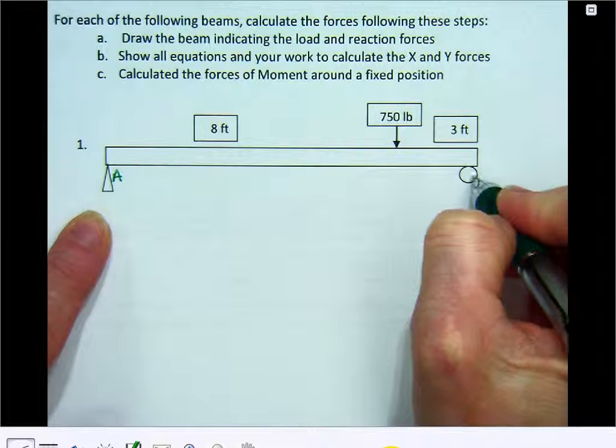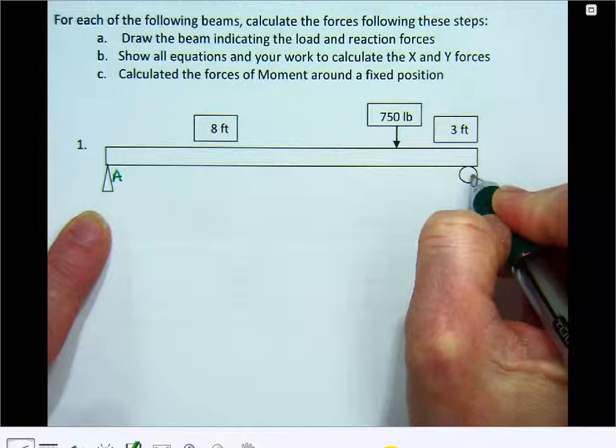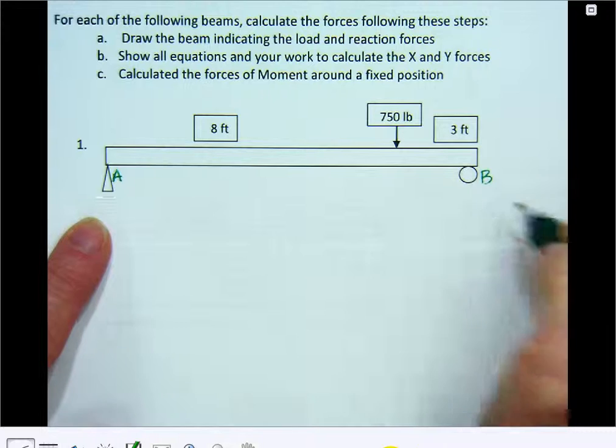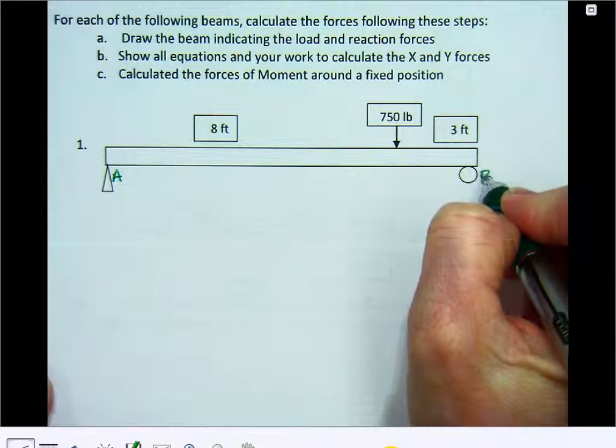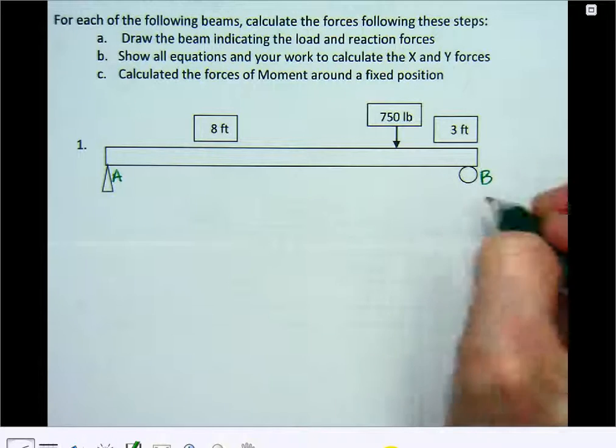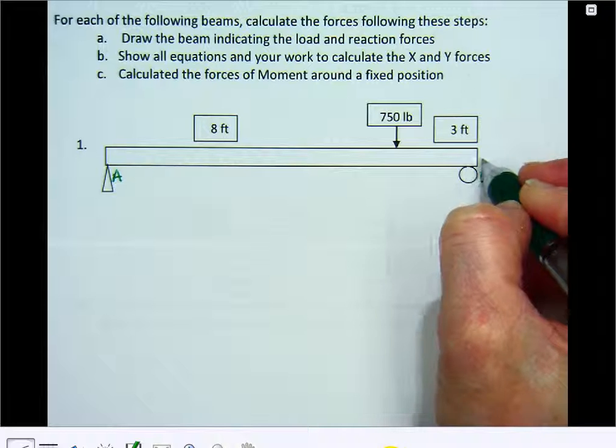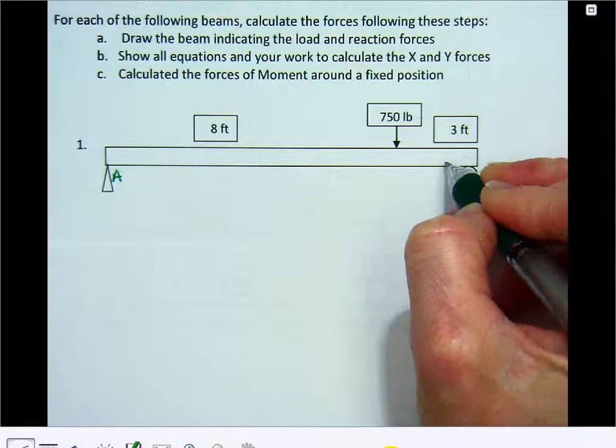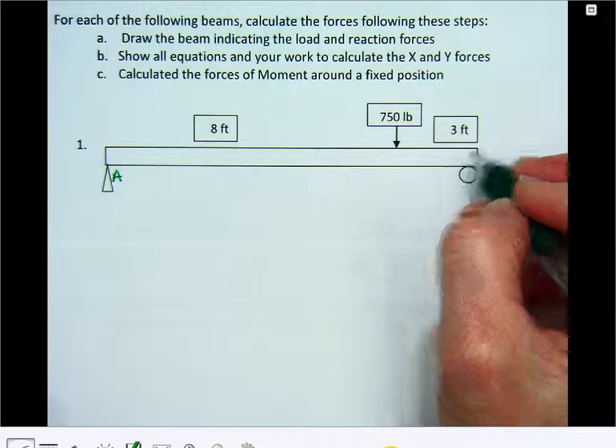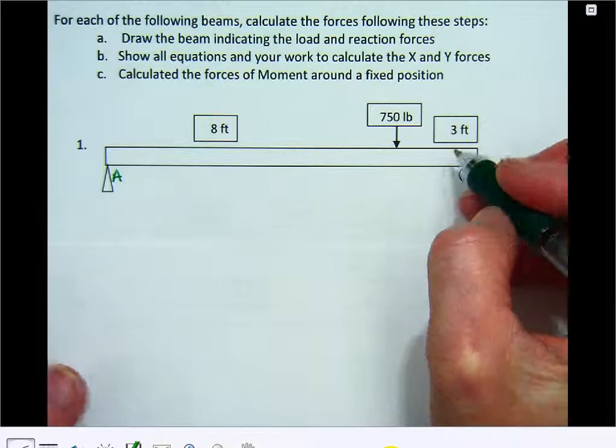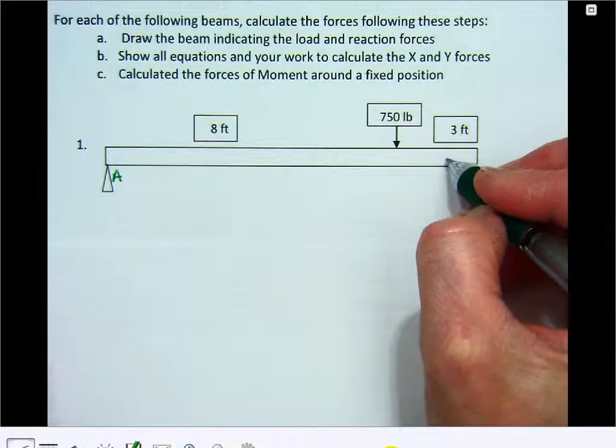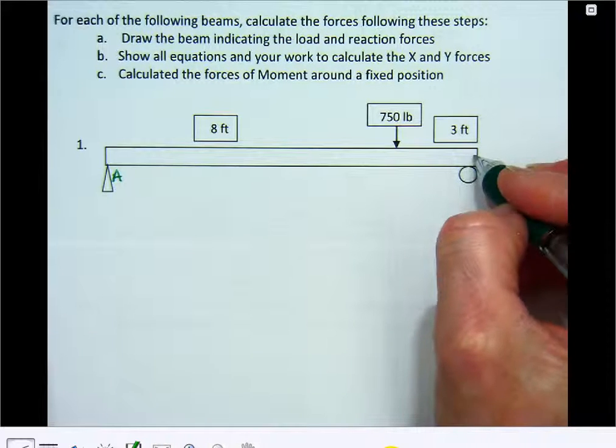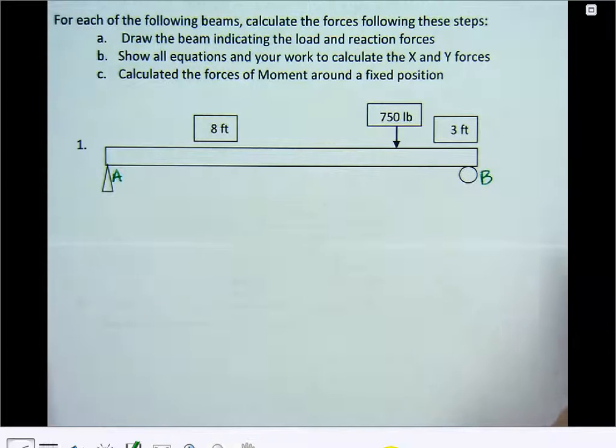And then on the right here, there's a circle. This is a roller. And I'm going to call this point B, just so we have a common reference to talk about. This one, the beam is allowed to move left and right and flex as the materials will expand with heat and contract as they get cold. So the temperature makes your bridge change, and we have to account for that. So this roller here helps us account for that.